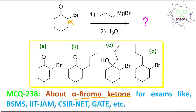The position with respect to the ketone is called the alpha position, and here bromine is attached, so that's why this is called alpha-bromoketone. The first step reaction is with alkyl magnesium bromide — more accurately, n-propyl magnesium bromide — in anhydrous ether or anhydrous THF solvent.